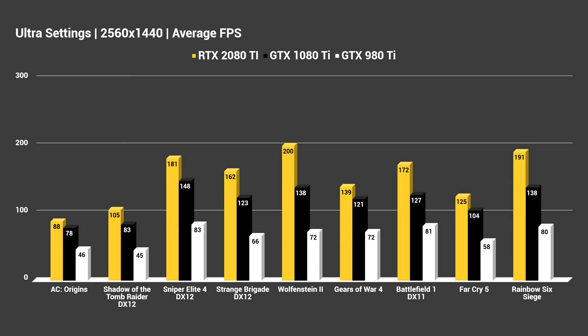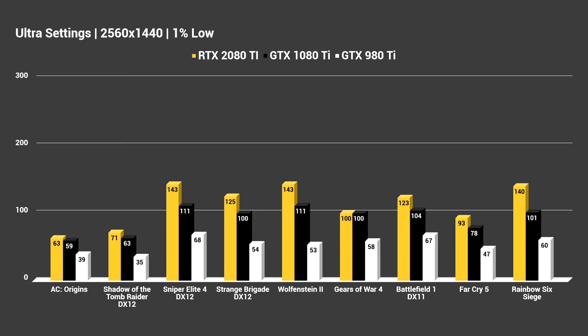Now looking at average FPS and 1% lows at 1440p: the 980Ti definitely struggles at ultra settings in some titles. Battlefield 1, Gears 4, Wolfenstein 2, Strange Brigade, Sniper Elite 4, and Rainbow Six Siege all averaged over 60 FPS. But Far Cry 5, Shadow of the Tomb Raider, and Assassin's Creed Origins — some of the most demanding games from the past year — did fall below 60 FPS averages. That said, at high settings instead of ultra, those averages would likely come up over 60. The 1% lows show the 980Ti struggling to stay above 60, while the other cards do very well. The 980Ti is showing its age at 1440p ultra, but that doesn't mean you need to run out and upgrade — let alone to a $1,200 card.